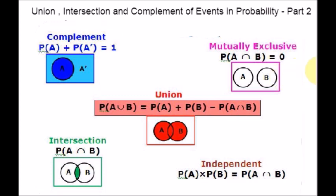There are different operations that can be performed on events, such as union of events, complement of events, and intersection of events. In today's video, we are going to particularly concentrate on the intersection of events. The intersection of two or more events gives a new compound event. Intersection of events means that all the events are occurring together. Even if one event holds false, all will be false. The intersection of events can only be true if and only if the event holds true.